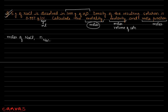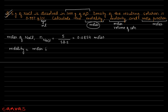Moles of NaCl = given weight / molecular weight = 5 g / 58.5 g/mol = 0.0854 moles. Molality = moles of solute / weight of solvent in kg = 0.0854 / 1 kg = 0.0854 mol/kg, since the solvent is 1000 grams which is 1 kg.